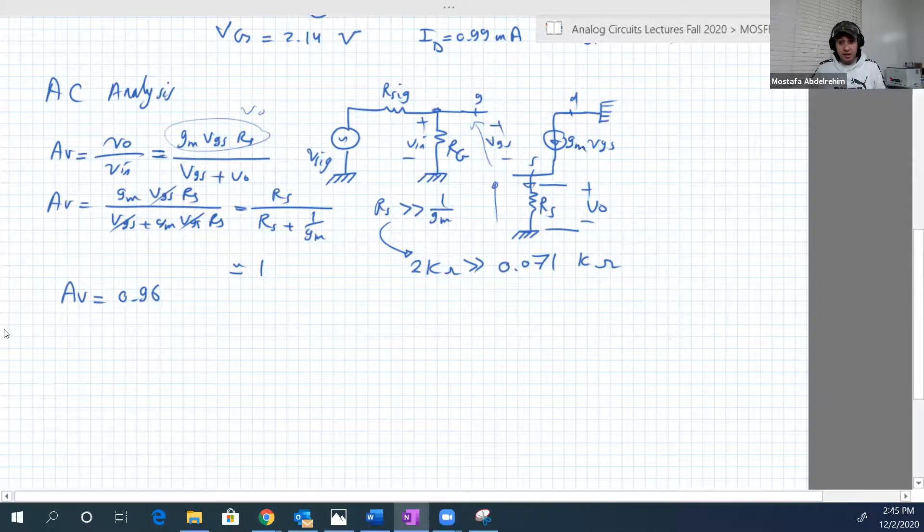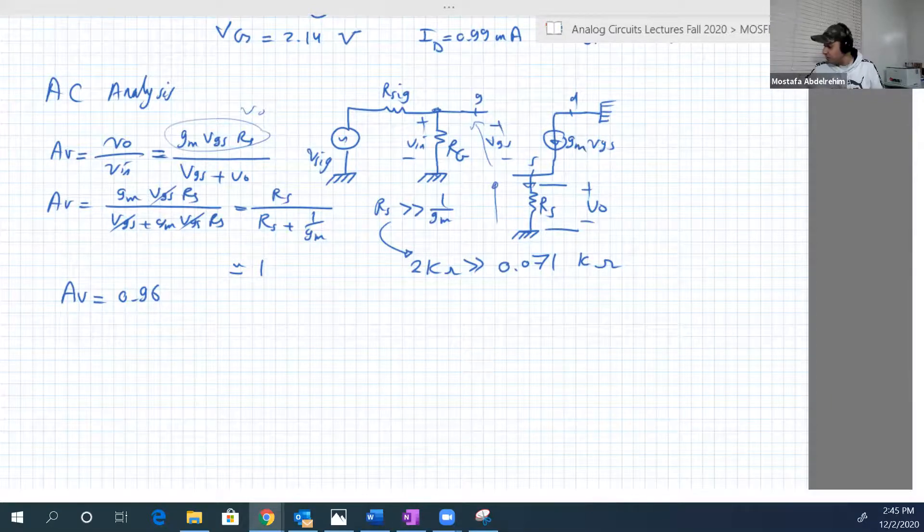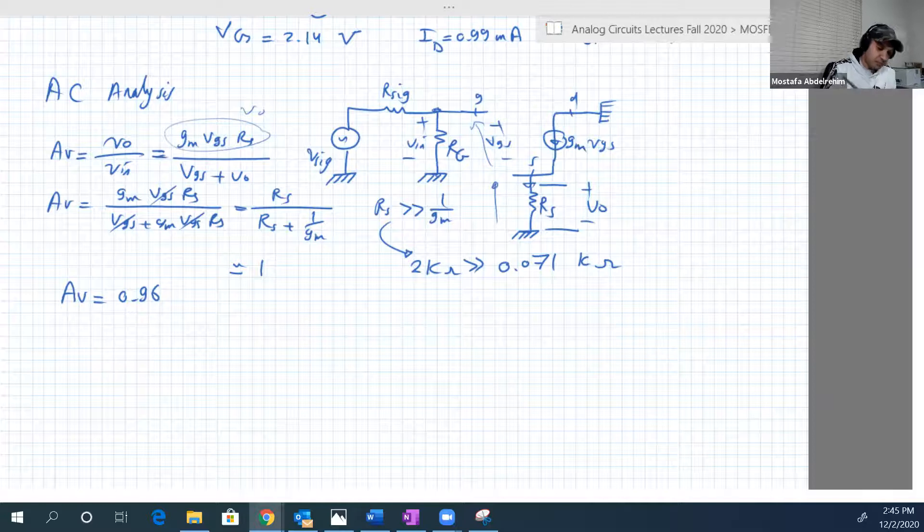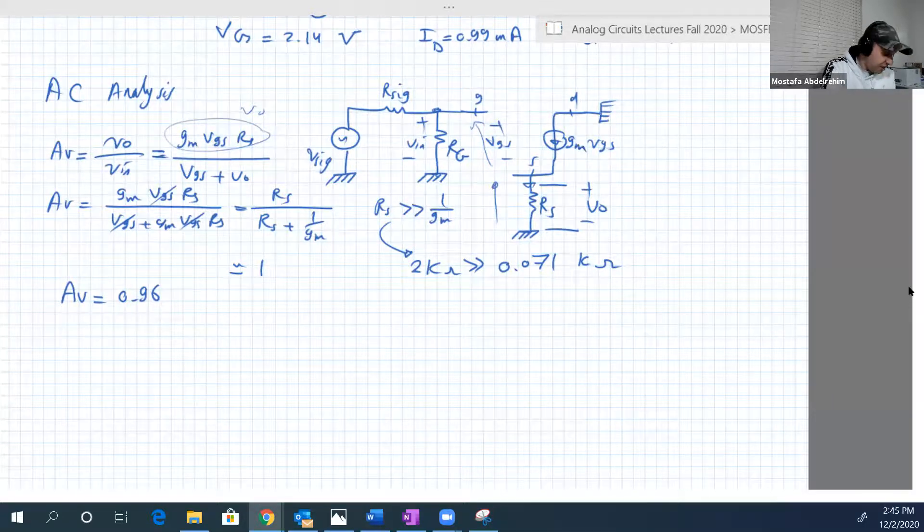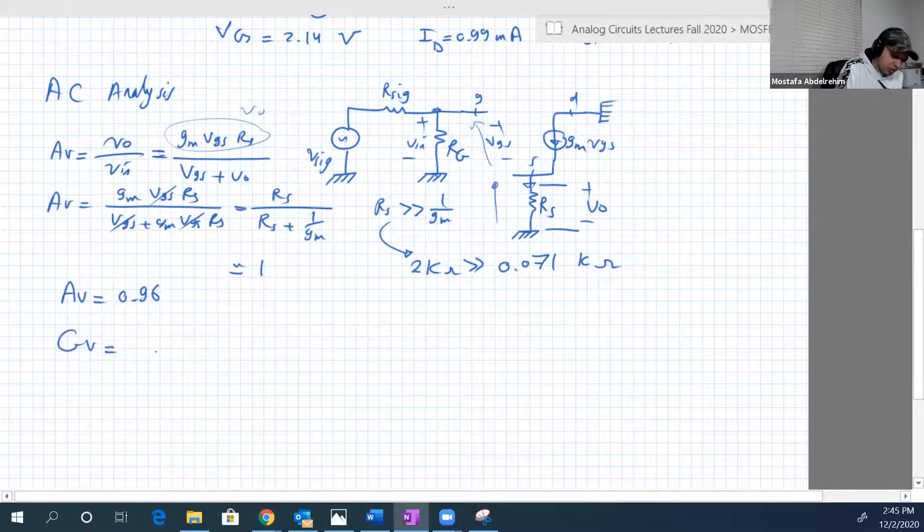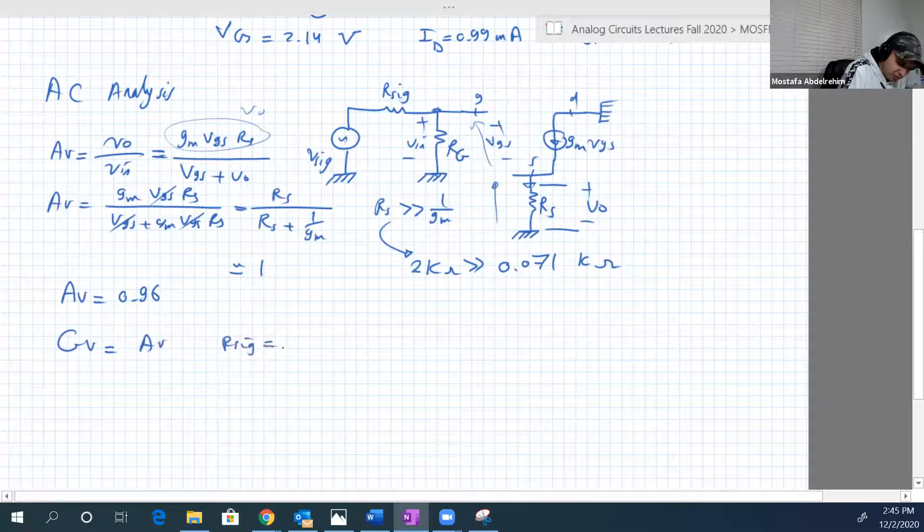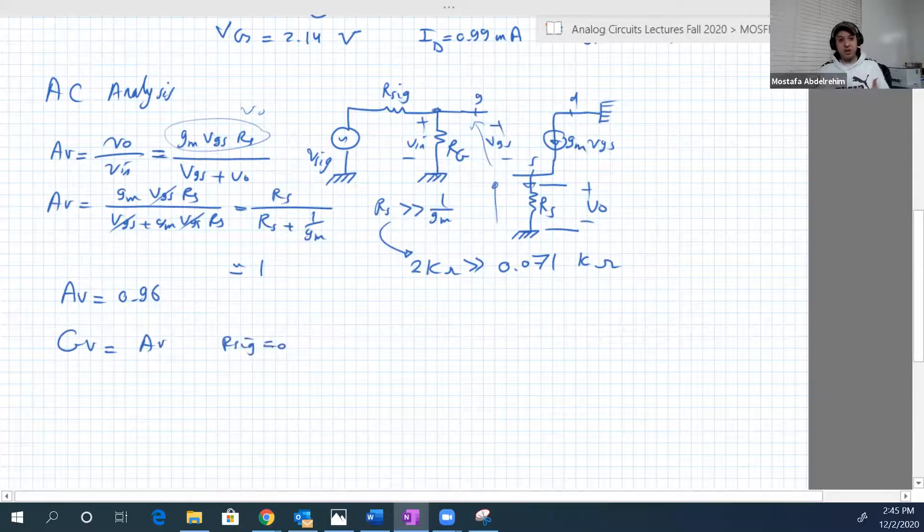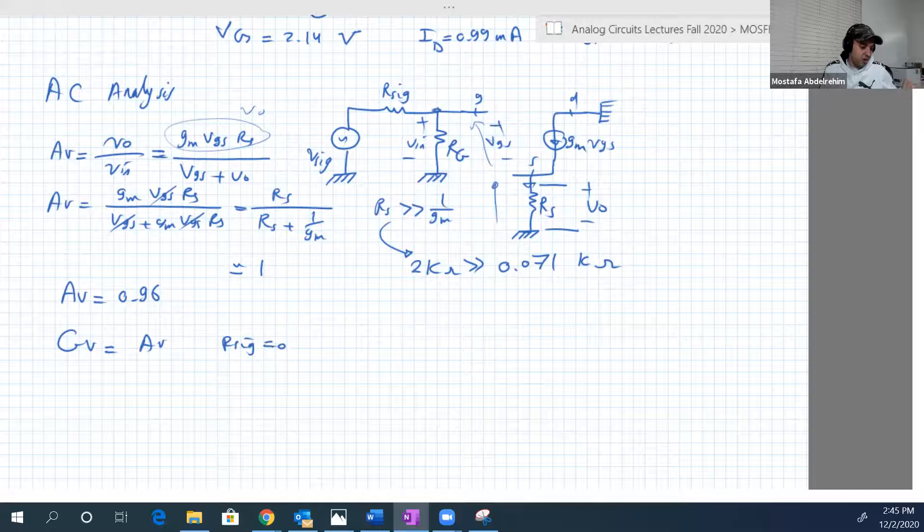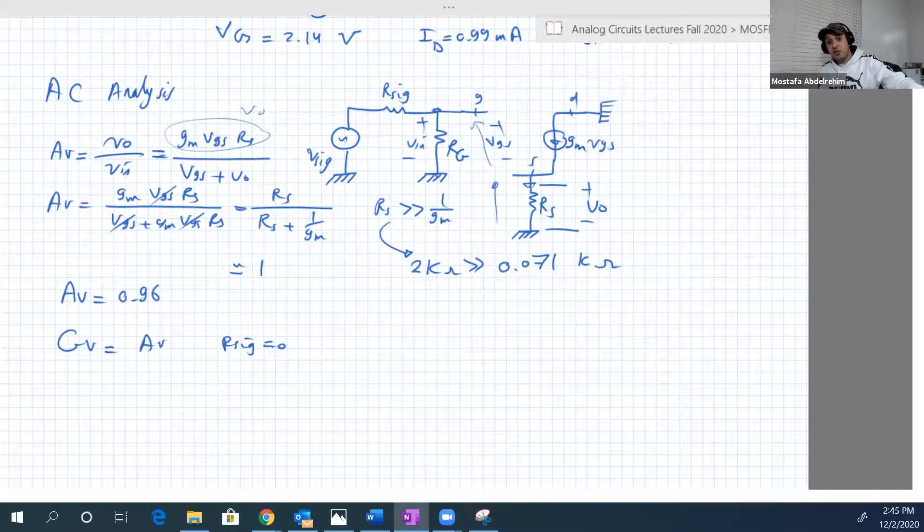And let's also do AV again, maybe I'm mistaken in something. So 2 over 2 plus 0.071, yeah, 0.96, like what I said. So here is AV, and here is, if we say, and GV of course, is equal, in that case, GV is equal to AV, because our signal is equal to zero. But if you want our signal, for example, 120, GV will be half AV, it will be 0.47 or something.